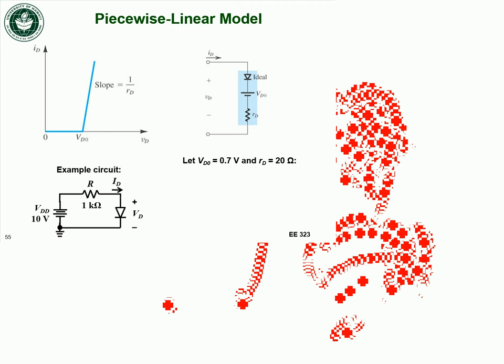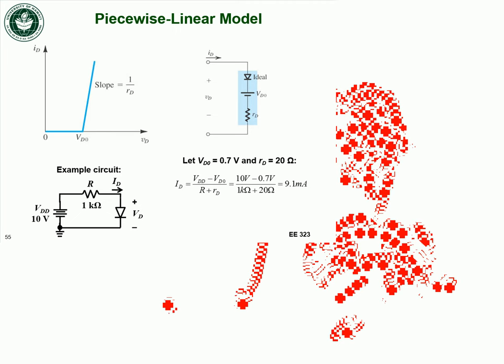Taking some example values — say V_D0 = 0.7 V and R_D = 20 Ω — we can calculate the diode current, which comes out to 9.1 mA. The voltage across the diode is V_D0 plus the voltage dropped across R_D. All of these models so far are approximations of what's really happening, because the diode current has an exponential dependence, which is harder to calculate. These are just increasing levels of complexity while still keeping it simpler than an exponential equation.